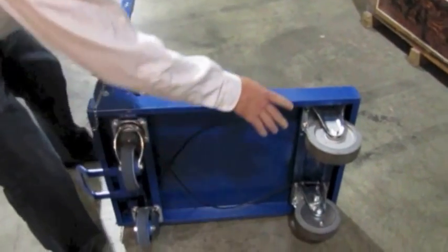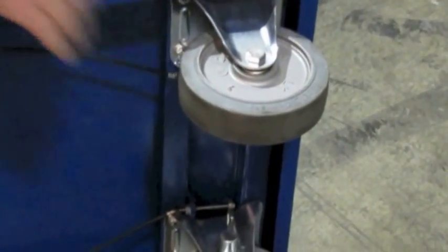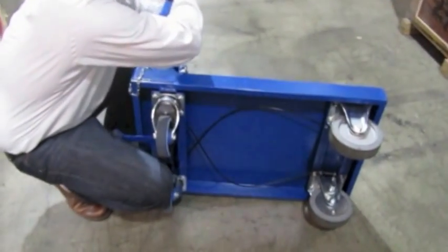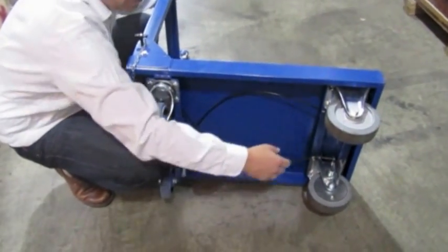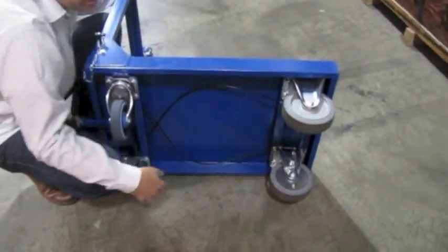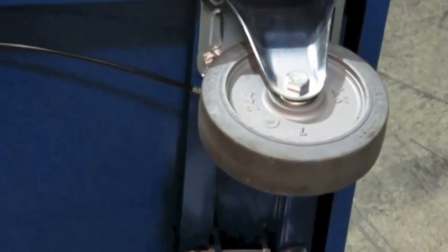The first casters that we demonstrated were the dead man casters, which are on the rigid wheels. As I engage this handle, as you saw just before, the wheels rotate freely. As I release this handle, they brake.